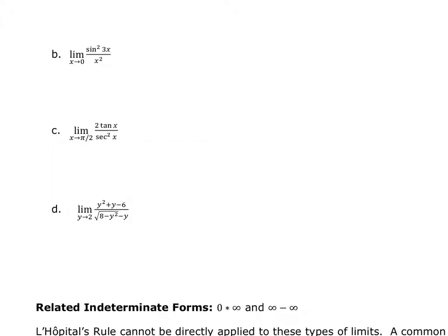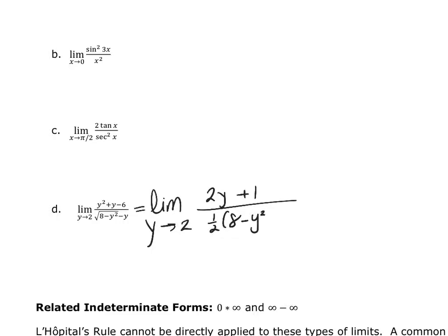But if I were to use L'Hopital's, I would go ahead and do the derivative of the numerator. So the limit as y approaches 2 — the derivative of the numerator gives me 2y plus 1. Then the derivative of the denominator — I have to use the chain rule — gives me 1 half times 8 minus y squared raised to the negative 1 half, multiplied by 2y minus 1.